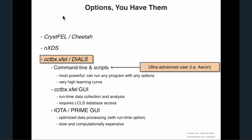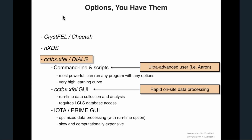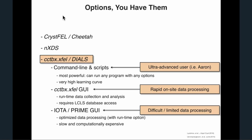So who should run what? An ultra-advanced user like Aaron prefers command lines and scripts — they allow you to do pretty much everything. For rapid on-site data processing, use cctbx.xfel GUI; it works very well and gives you runtime information to decide when to stop your experiment. If you have difficult or limited data — a small data set or one with mostly blank images and just a few images with diffraction — go the IOTA Prime route. There is also significant overlap between these programs; you can do iterative data processing with cctbx.xfel GUI, and IOTA now has an option for more expeditious on-site data processing.